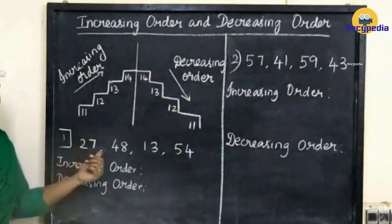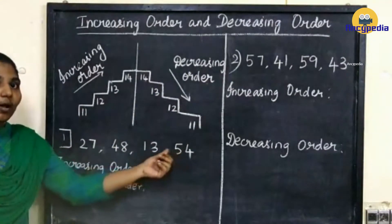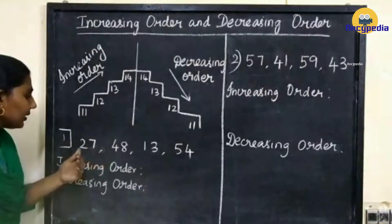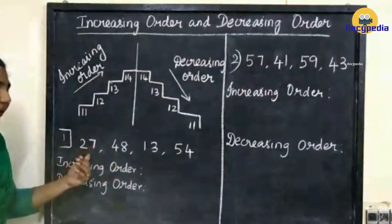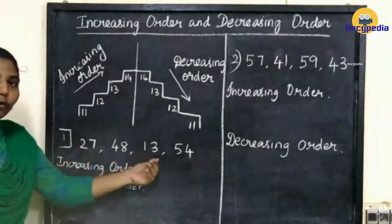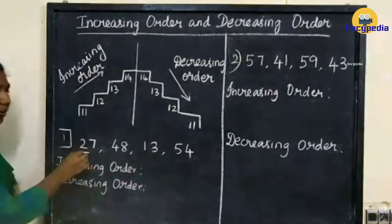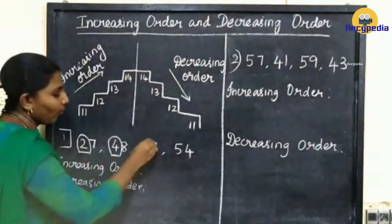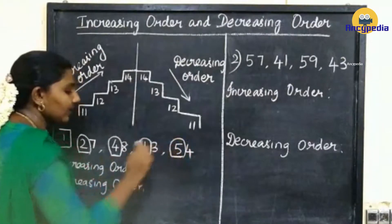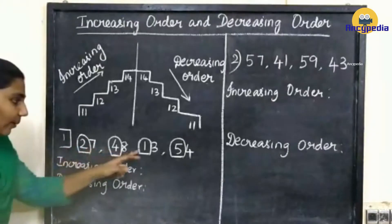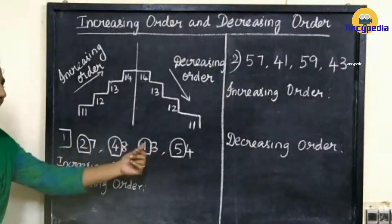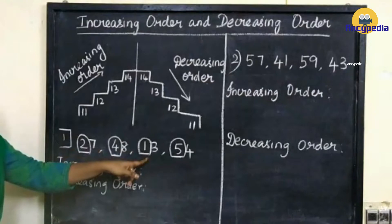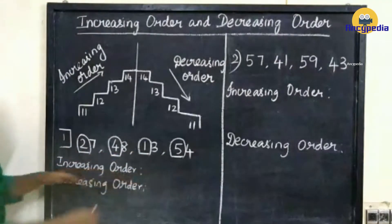In the first question, we have 27, 48, 13 and 54. We have to write the numbers in increasing order and decreasing order. First, we have to compare the numbers in the tens place of all 4 numbers. In tens place we have 2, 4, 1, and 5. Which one is smaller? 1 is smaller. So in increasing order, first we have to write the number 13.